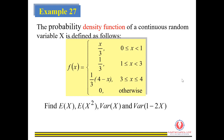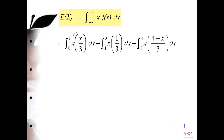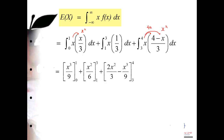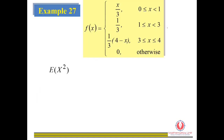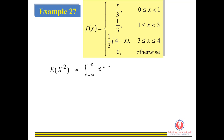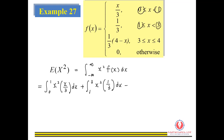Next, we find the expectation and variance for a new question. First, we multiply X with each piece of the function, expand, substitute the limits, and get E(X). For E(X²), we multiply by X² for each piece of the function — integrating from 0 to 4 in sections. Don't forget each piece of the function needs to be multiplied by X². Before integrating, we need to expand first.